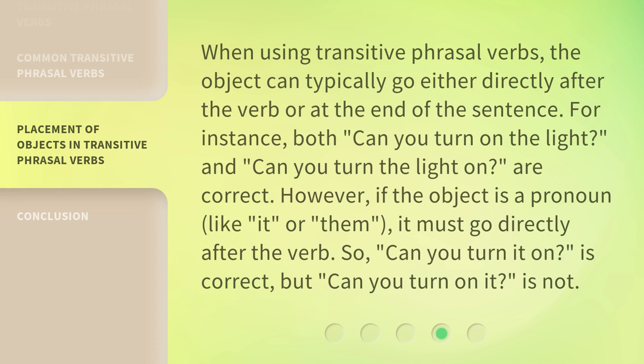When using transitive phrasal verbs, the object can typically go either directly after the verb or at the end of the sentence. For instance, both 'Can you turn on the light?' and 'Can you turn the light on?' are correct. However, if the object is a pronoun, like 'it' or 'them', it must go directly after the verb. So 'Can you turn it on?' is correct, but 'Can you turn on it?' is not.